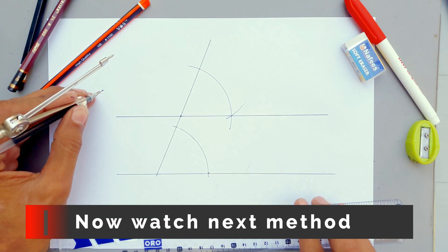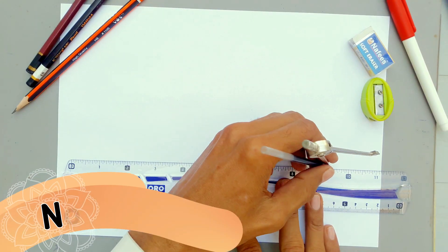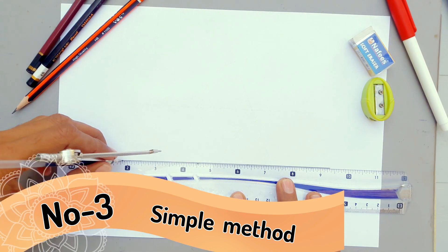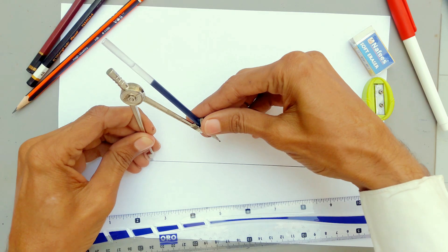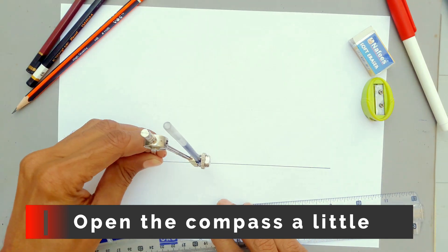Now watch the next method. Number 3, Simple Method. This method is without fixed distance. Open the compass a little like this.